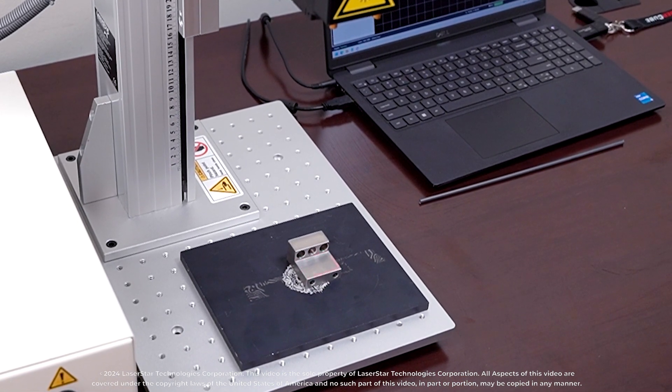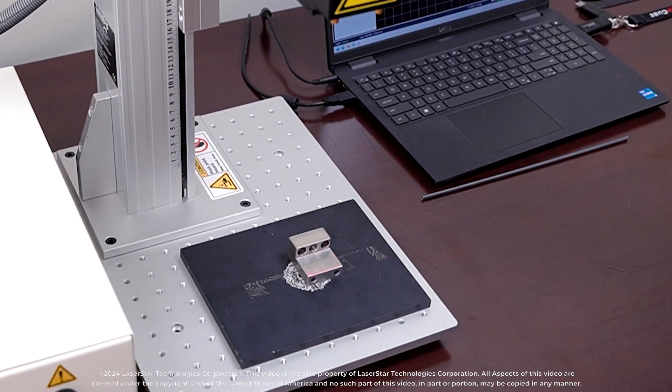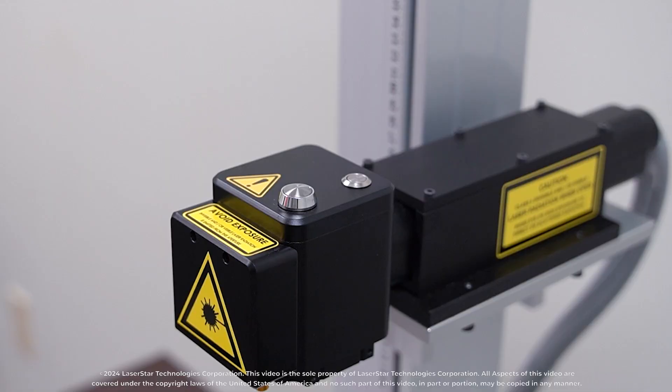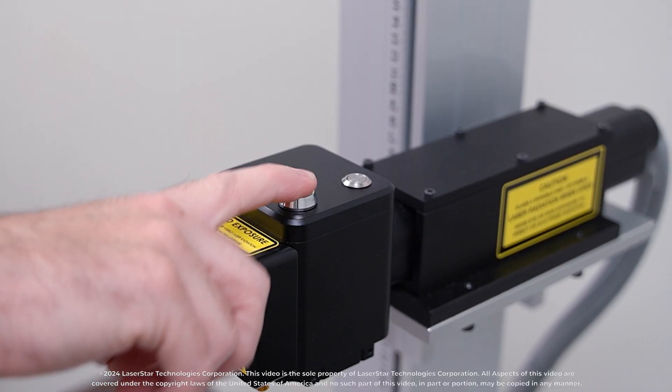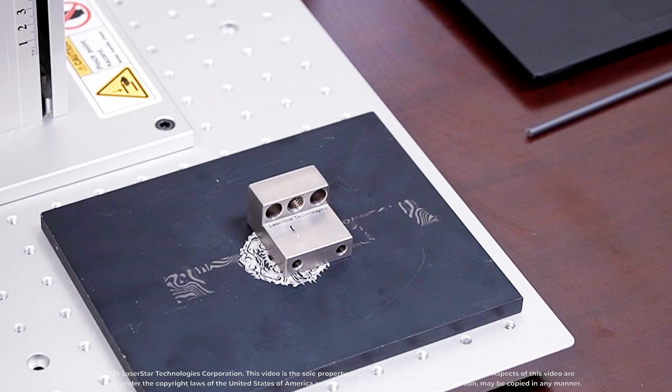Additionally, there is a red profile rectangle alignment feature demonstrating the exact marking location on the part. So once aligned, press the mark button on top of the scan head or in the software to start the laser.